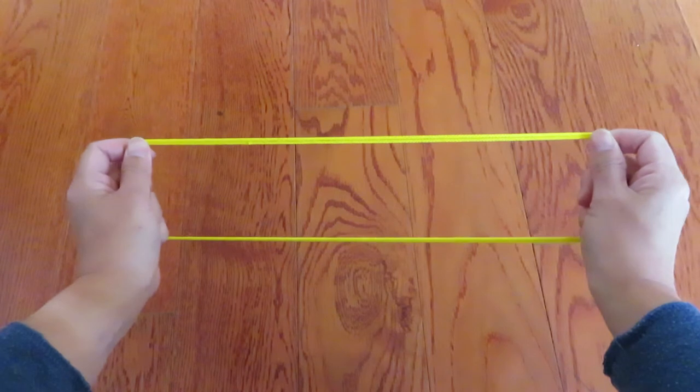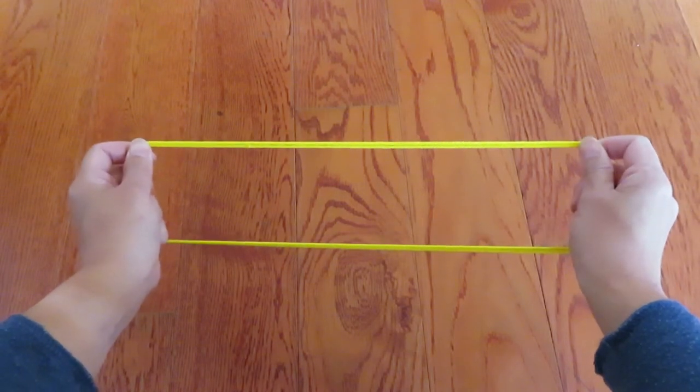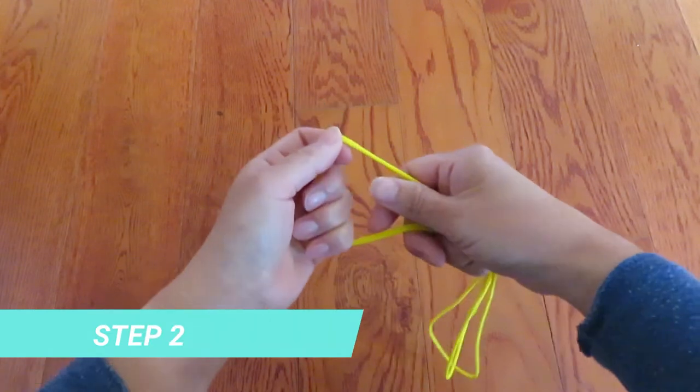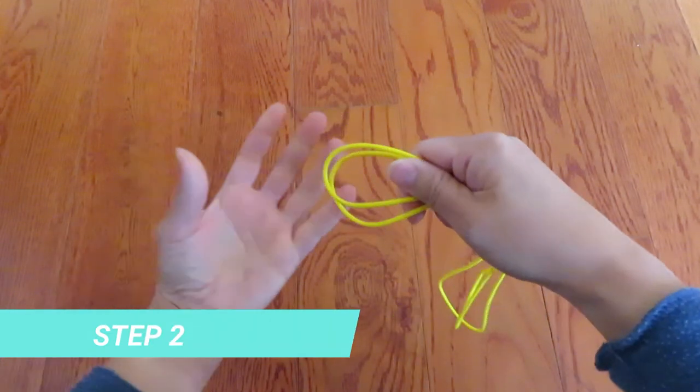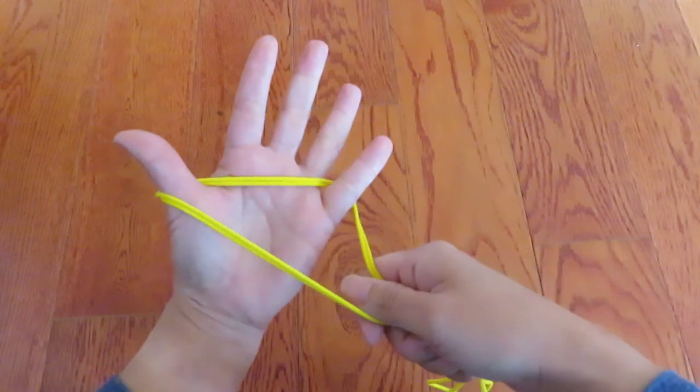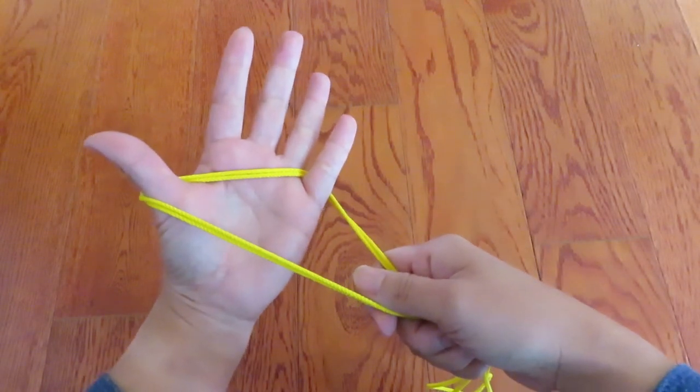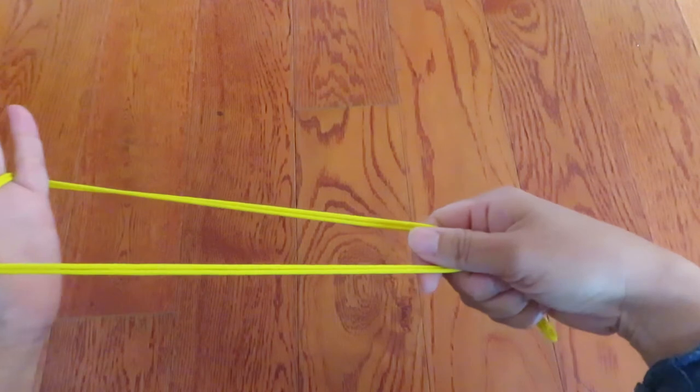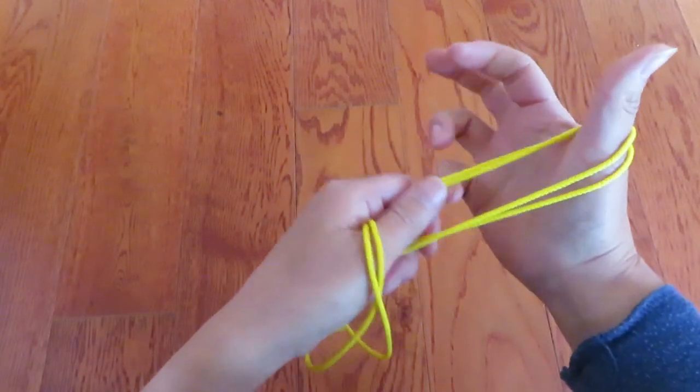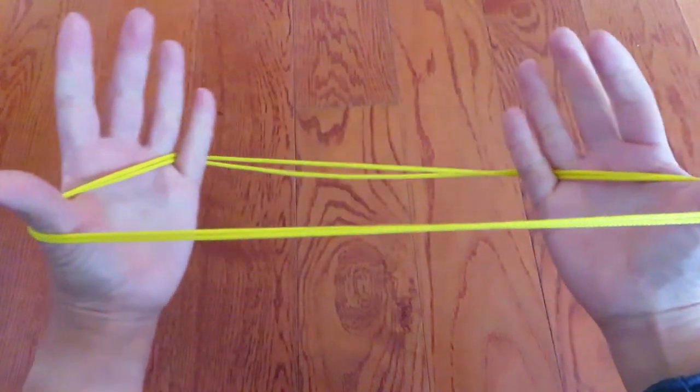We are going to use double loop. Now, one end of the loop, hook on thumb and pinky. And then the other end of the loop, hook thumb and pinky like this.